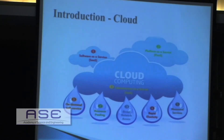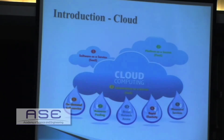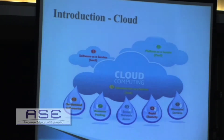As you all know, cloud computing is served in three different service models: software as a service, platform as a service, and infrastructure as a service. Amazon EC2 is our experimental test bed, operating under IaaS — infrastructure as a service. IaaS features include on-demand self-service, elasticity, resource pooling, and measured services.